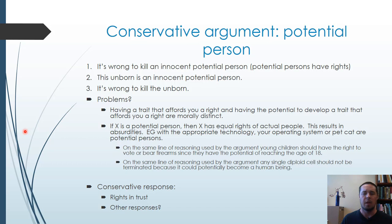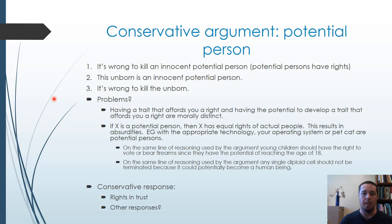The conservative could respond by arguing that maybe the embryo is not a person at conception, but it is a potential person, and that is what gives the unborn the same rights as a person. The argument would be: it's wrong to kill an innocent potential person; the unborn is an innocent potential person; therefore it's wrong to kill the unborn. One potential problem is that having a trait that affords you a right and having the potential to develop that trait are morally distinct.